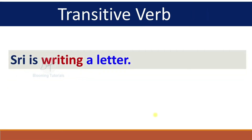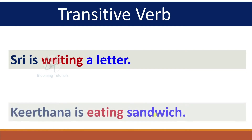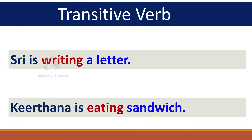Let us see examples. 'Three is writing a letter.' Here, 'writing' is the main verb. Ask: Three is writing what? The answer is 'a letter' — that is the direct object, so the verb is transitive. 'Kirtana is eating a sandwich.' Kirtana is eating what? Sandwich. It answers the question 'what,' so 'sandwich' is the direct object.